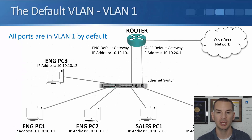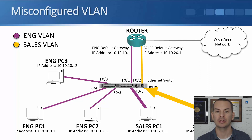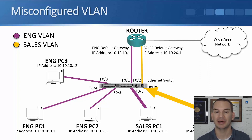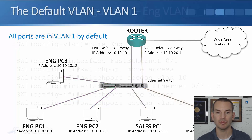Looking at our topology, the engineering PCs are on interfaces FastEthernet 0/3, 0/4, and 0/5. We also need to put the port connected to the router into that VLAN for the engineering subnet, so FastEthernet 0/1 will also go into the engineering VLAN. Interfaces FastEthernet 0/2, 0/6, and 0/7 are going to go into the sales VLAN.